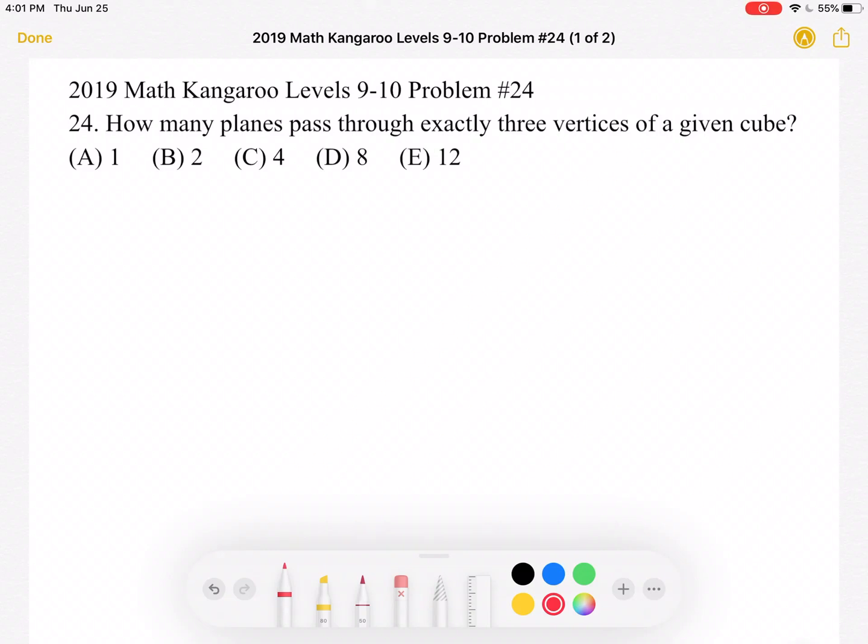This is the 2019 Math Kangaroo levels 9-10 problem number 24. How many planes pass through exactly three vertices of a given cube? The answer choices are: (A) 1, (B) 2, (C) 4, (D) 8, or (E) 12.